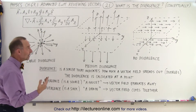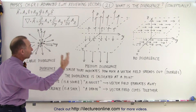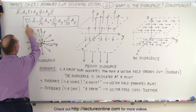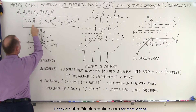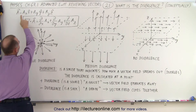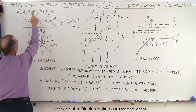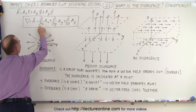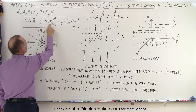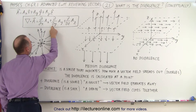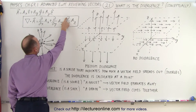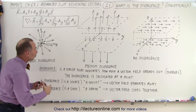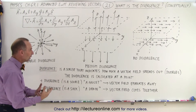So to calculate the divergence, we take the del operator and multiply via the dot product with the vector quantity. If we define the vector with an x component, a y component, and a z component, that means we take the partial derivative with respect to x of the x component, plus the partial derivative with respect to y of the y component, plus the partial derivative with respect to z of the z component of the vector. Notice we end up with a scalar quantity.